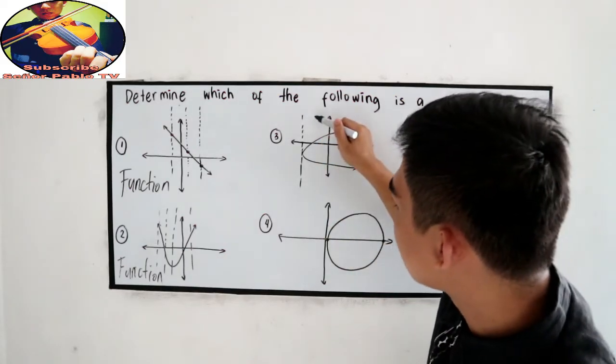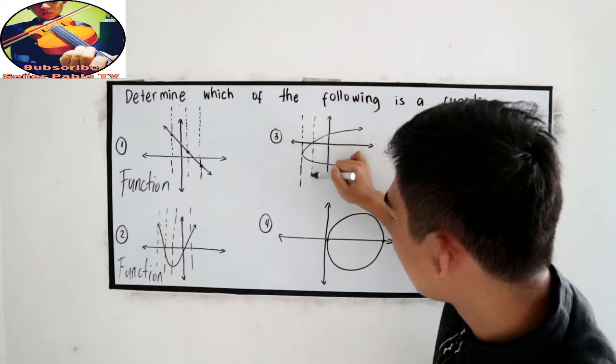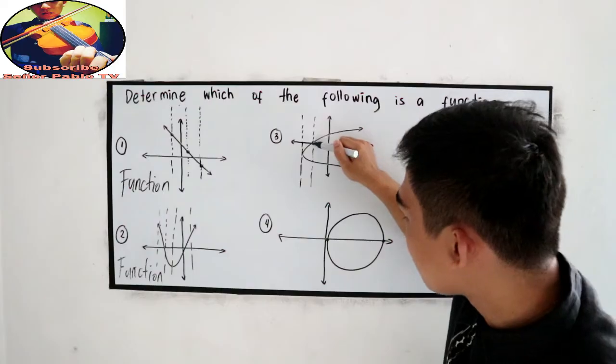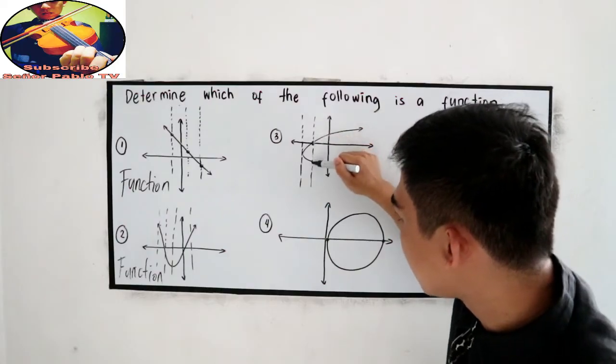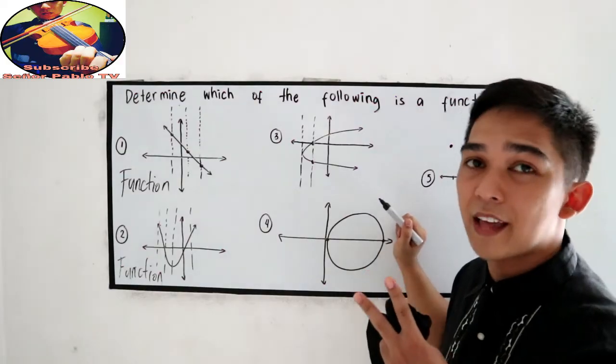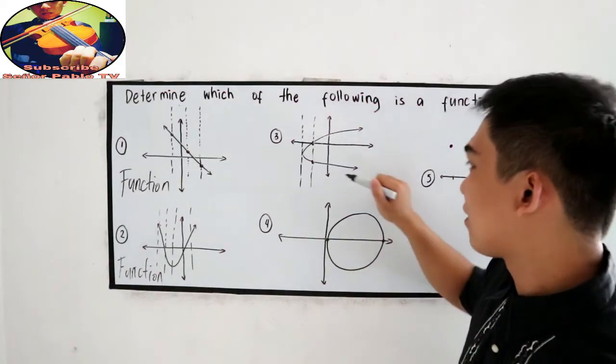How about at this point? So our graph is here. We touch just one point here, and the other one is here. Is it a function or not?